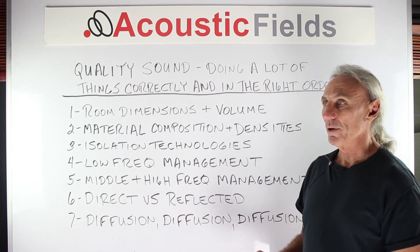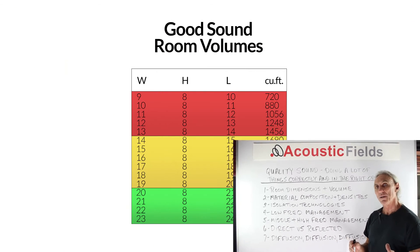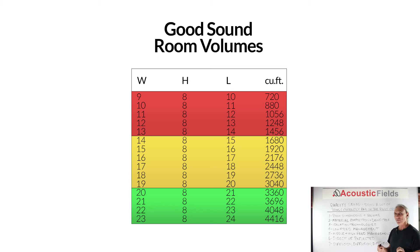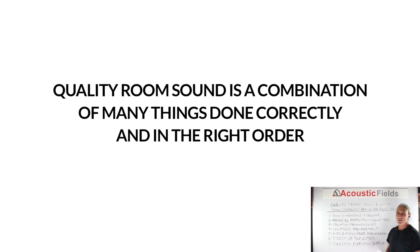In summary, there are certain room volumes — as you can see in graphic one, anything below 1,500 cubic feet is almost a no-go for everything, and less than 3,000 cubic feet is almost a no-go for a lot of things. You have to be careful about how you match the room size to the usage. And as shown in graphic two, remember that quality sound is a combination of doing a lot of things correctly and in the right order.